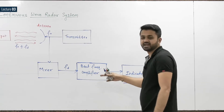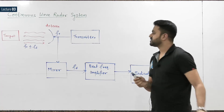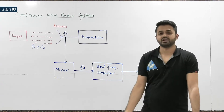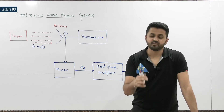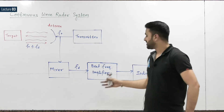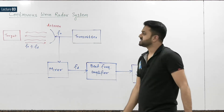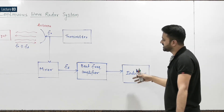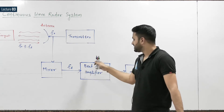The beat frequency amplifier removes all clutter and echo from stationary targets, giving only the location of the moving target. This continuous wave radar system provides information only about moving targets. All echo signals from stationary targets are removed by the beat frequency amplifier. Just remember that this continuous wave radar system is used for detection of moving targets, and it gives the indication of moving targets while rejecting echoes from stationary targets.